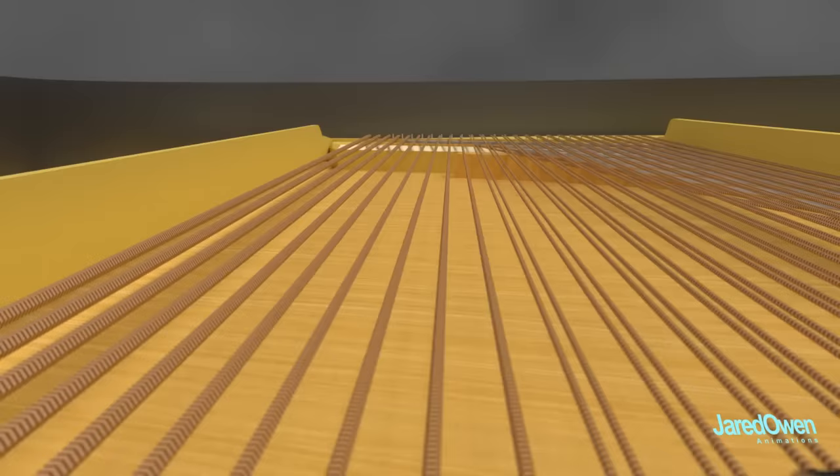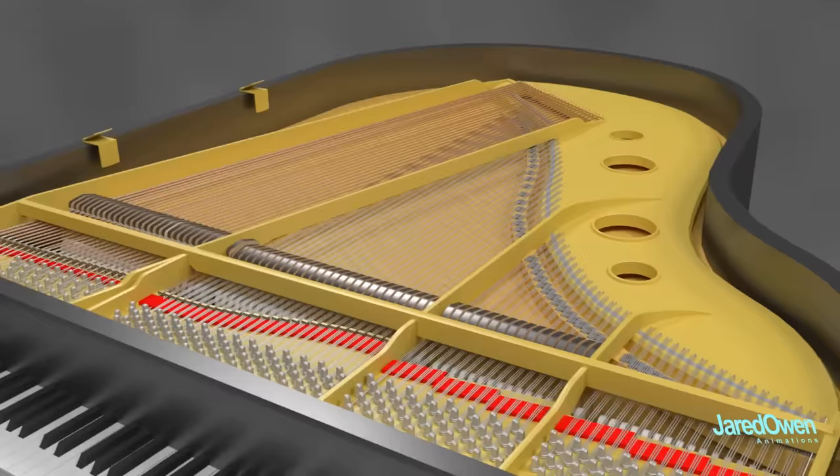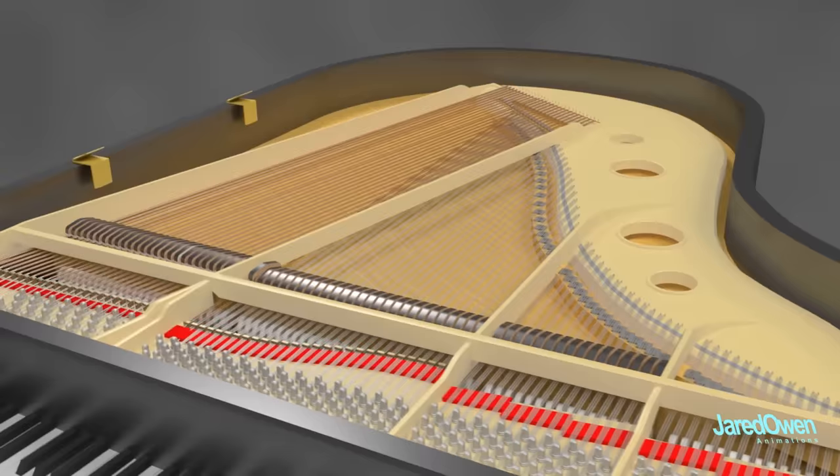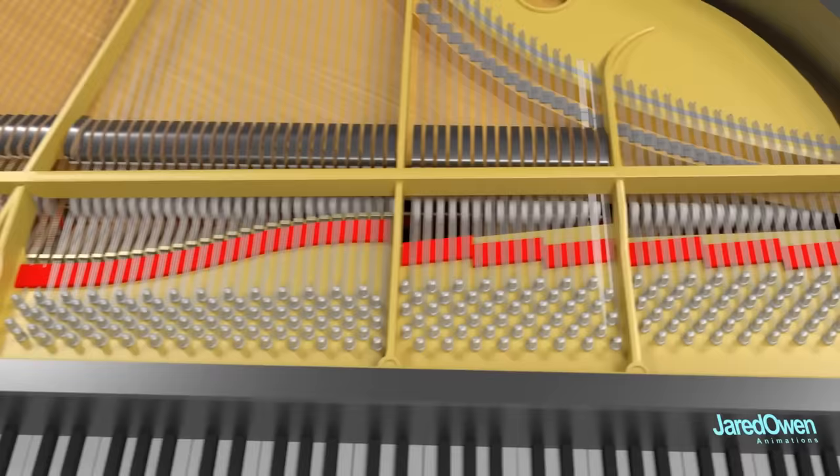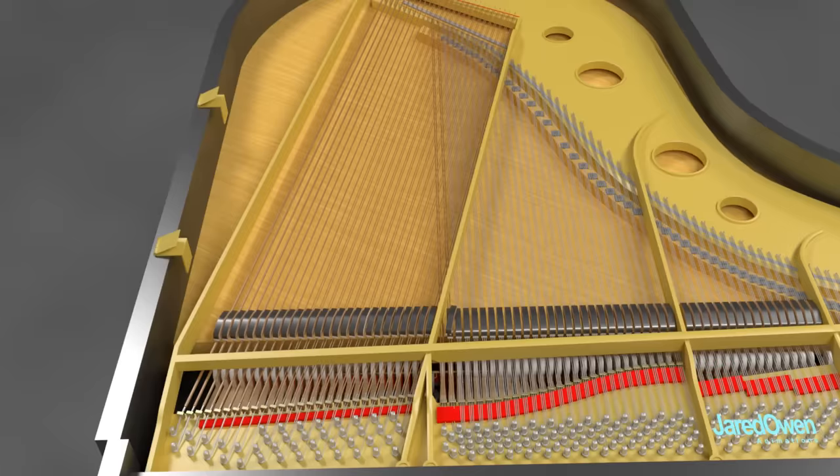The first thing you'll notice are strings - lots of strings. They are stretched along a cast iron frame which has to be very strong to support the tension. Towards the right, the strings are shorter and thinner to produce higher notes. Towards the left, the strings are longer and thicker to produce lower notes. The different lengths of strings is what gives the grand piano its unique shape.